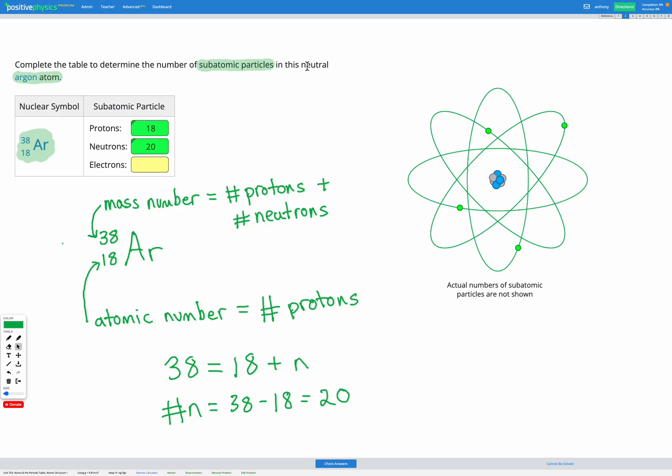Now it tells us in the question, it's a neutral argon atom. Neutral means it's not positively charged, it's not negatively charged, it just has zero charge. So since we have 18 protons, which are positively charged, if we want it overall to be neutral and have zero charge, those 18 positively charged protons all need to be balanced out with 18 negatively charged electrons. So this is going to be the same number of electrons as there were protons.